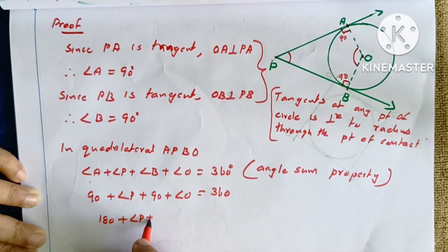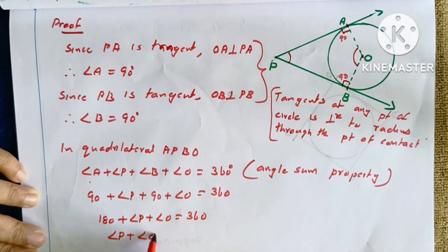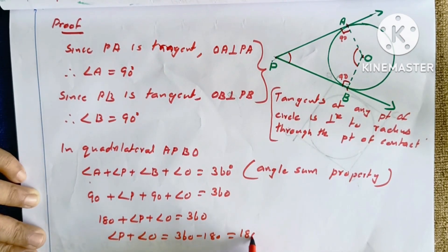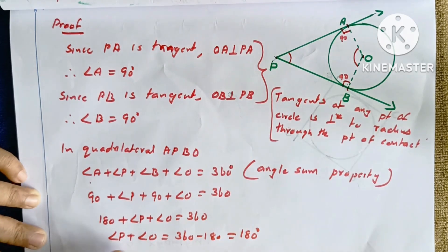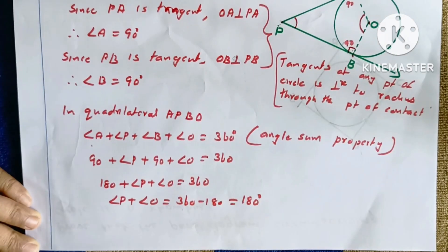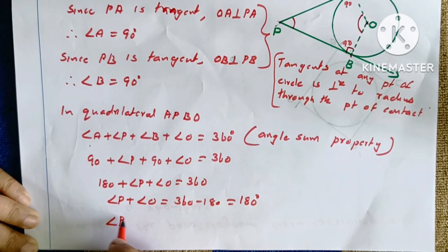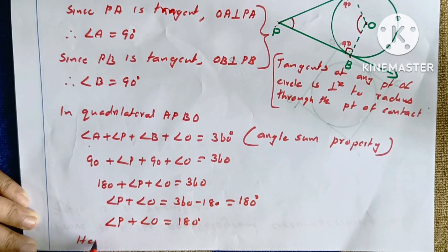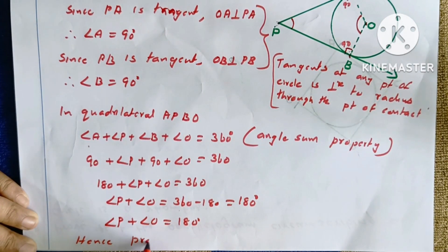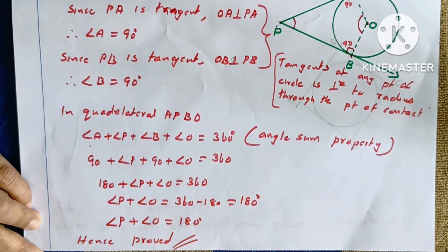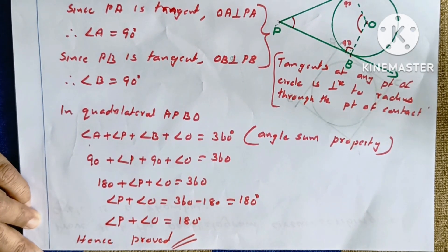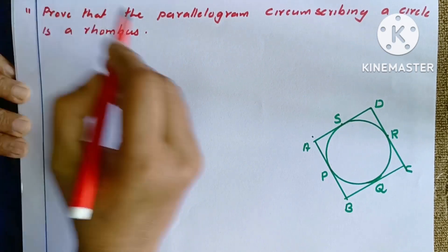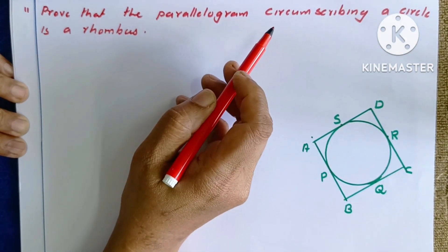Since angle A and angle B are each 90 degrees, their sum is 180 degrees. Therefore, angle P plus angle O equals 360 minus 180, which equals 180 degrees. Hence angle P plus angle O equals 180 degrees — proved.